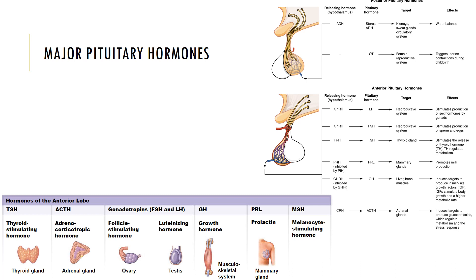Growth hormone (GH) stimulates cell growth and reproduction by accelerating protein synthesis, particularly in skeletal muscle and bone. It is regulated by growth hormone releasing hormone and growth hormone inhibiting hormone from the hypothalamus. Prolactin (PRL) works with other hormones to stimulate mammary gland development and milk production during pregnancy and nursing, regulated by prolactin releasing and inhibiting hormones. Melanocyte stimulating hormone (MSH) stimulates melanocytes of the skin to increase melanin production.